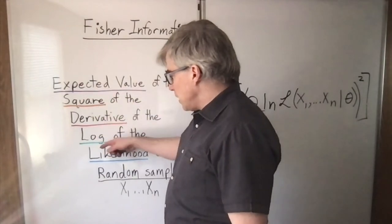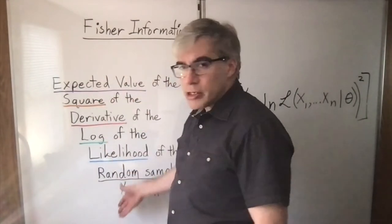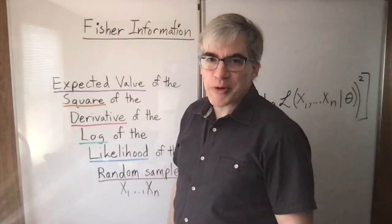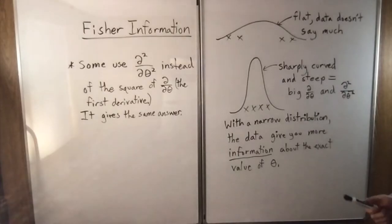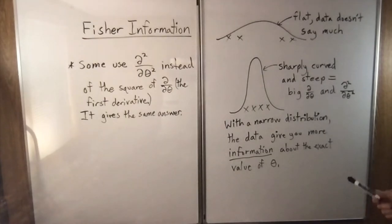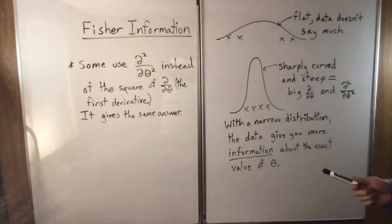E-S-D-L-L-R — "extra special dollar." Come up with your own mnemonic if you like. The Fisher information is sometimes defined with the second derivative instead of the square of the first derivative — it gives the same answer.